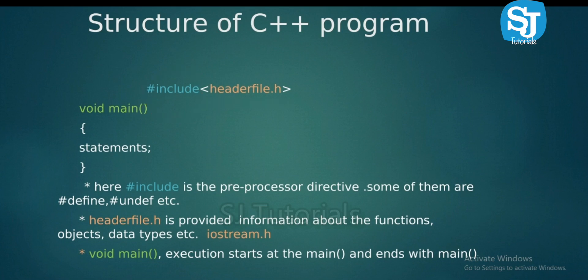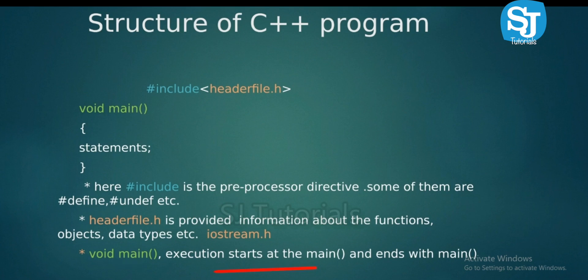The header file provides information about functions and other data types. You can see iostream.h in the same example. The execution starts at the main point.